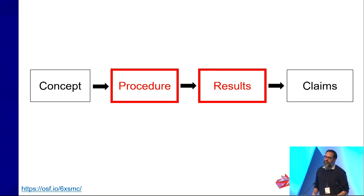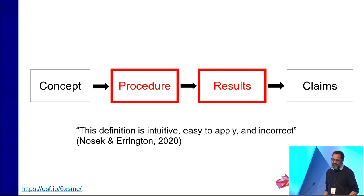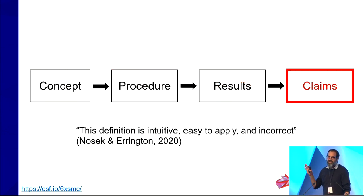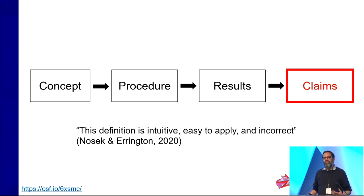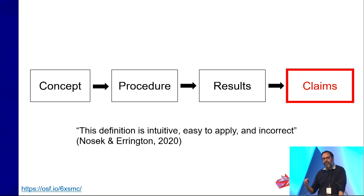When we talk about replication, we focus on procedures or results — the methodological details that distinguish different types. As Nosek and Arrington said, this focus is intuitive, easy to apply, and incorrect. Rather, we should focus on the actual claim being made. A replication is any result that is diagnostic of a specific claim. This helps us avoid methodological minutiae and instead focus on the inferences we draw from evidence.